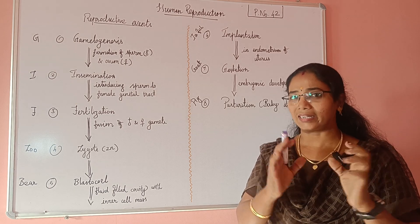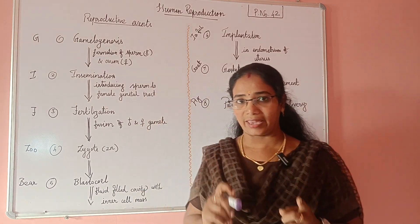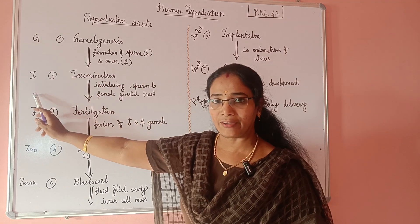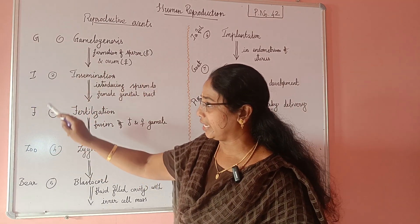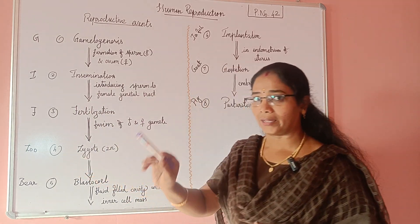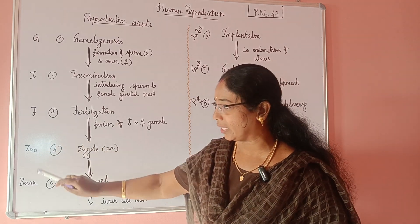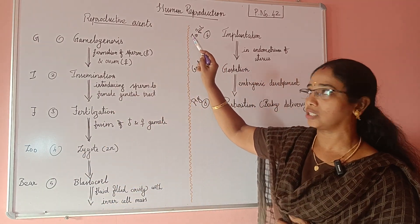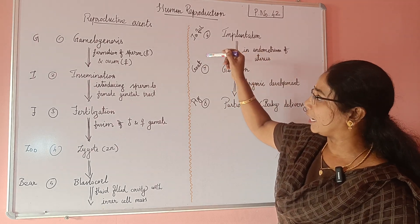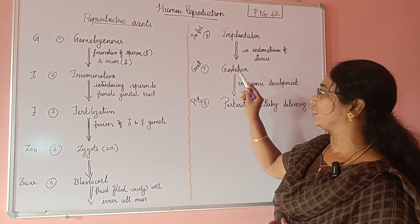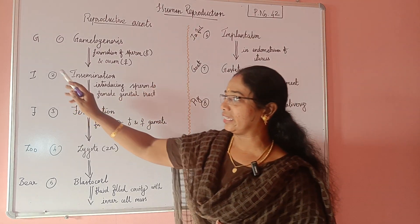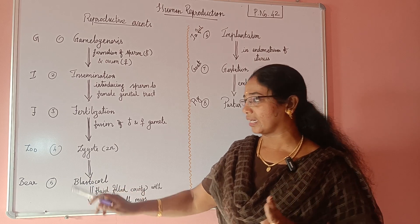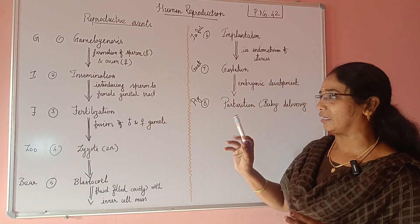How do we remember these steps? I know you have the best idea using the mnemonic GIF. G is for gametogenesis, I is for insemination or fertilization. In the GIF, you will find a zoo. In the zoo — B is for blastocele. Then I is for implantation, G is for gestation, and P is for parturition. So the trick is: GIF, then in the zoo — ice fish, goat, pig. This helps you remember all the reproductive events in order.